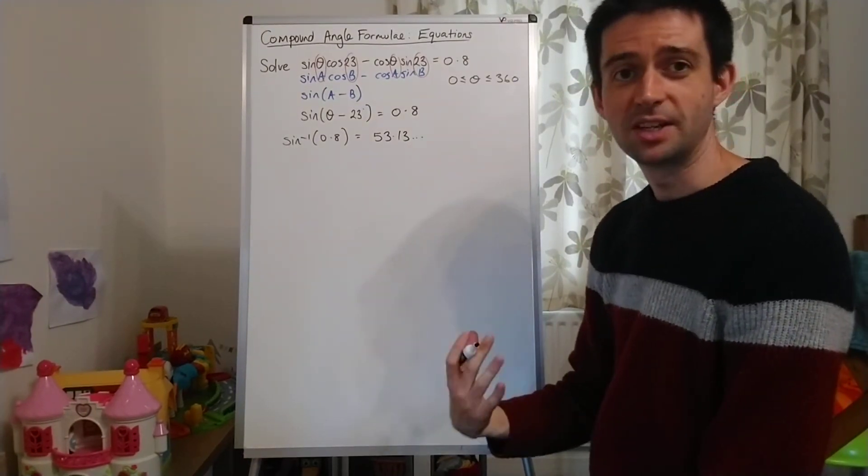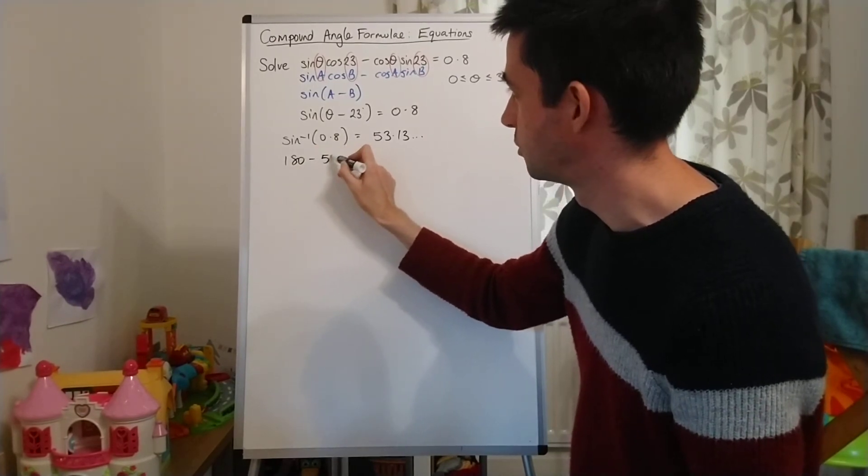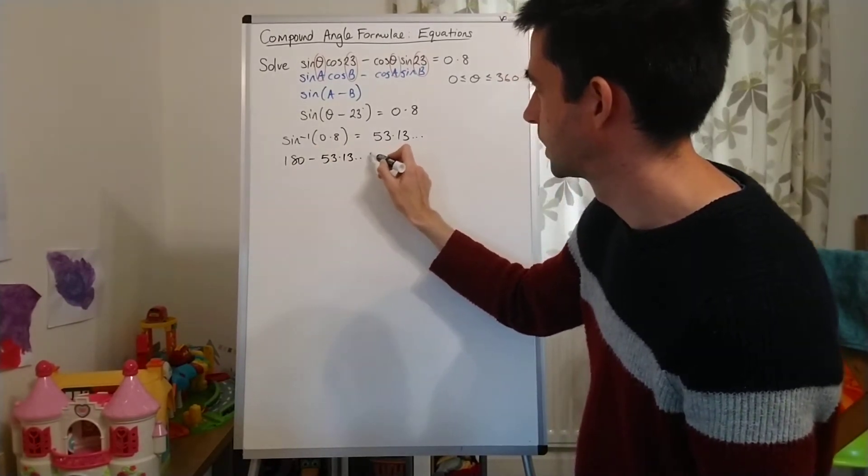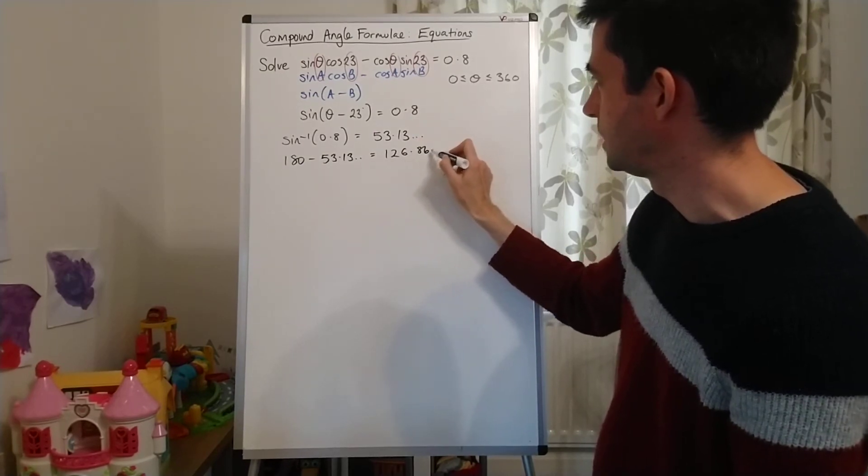And I know by now that my second solution for sin is 180 minus my principal solution here. So that's going to be 126.86.